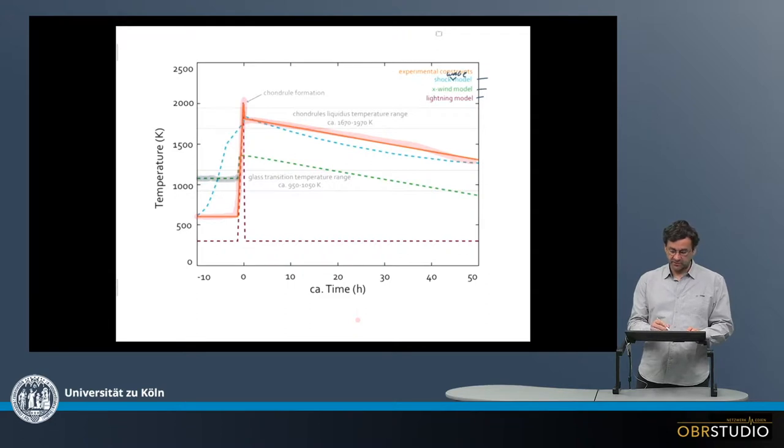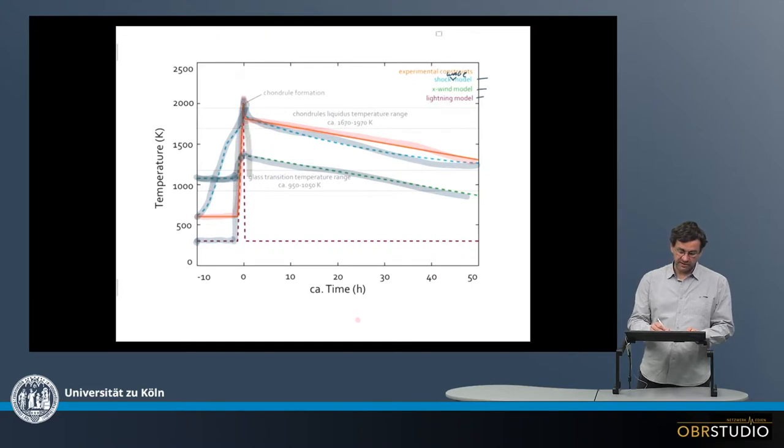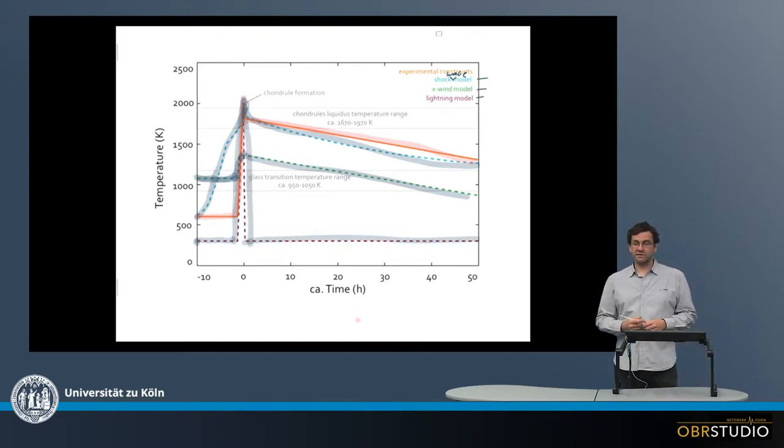So starting with the shock wave model, shock wave model goes up here and down there again. Then the X-wind model starting at higher ambient temperatures, going not that high and then slowly back. And then the nebular lightning model is actually going really very fast up and back down again. And then it stays down here.